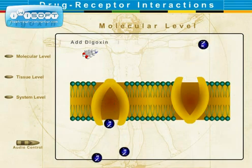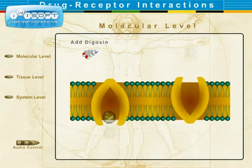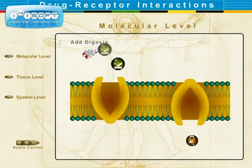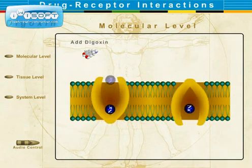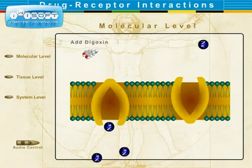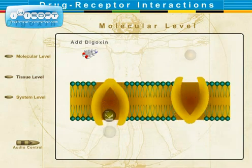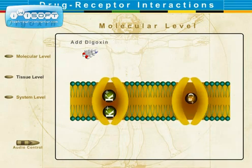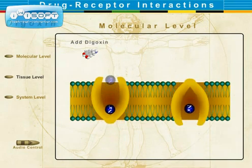In congestive heart failure, the body retains too much fluid, and this presents a problem for the heart as a pump. When digoxin is added, it inhibits the sodium-potassium ATPase transport system, leading to a loss of potassium from the heart cells and an increase of sodium in heart cells. The increased sodium activates the sodium-calcium pump that exchanges intracellular sodium for extracellular calcium. The increase in intracellular calcium enhances myocardial contraction, causing more force to be generated without increased oxygen consumption.